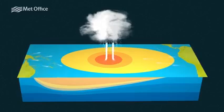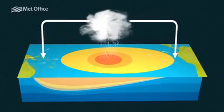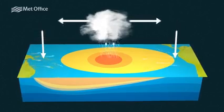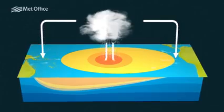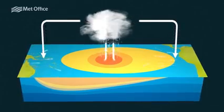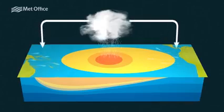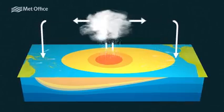This changes rainfall patterns over the equatorial Pacific, as well as the large-scale wind patterns. It's this change in winds which has a knock-on effect, changing temperature and rainfall in locations around the world.